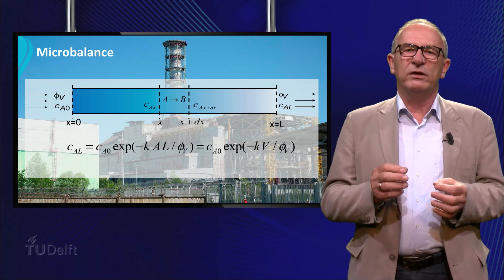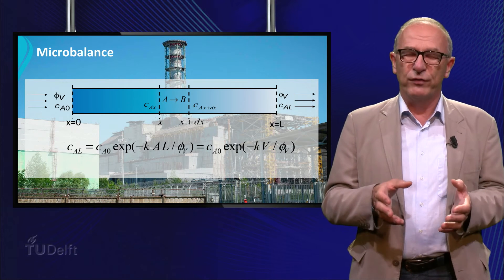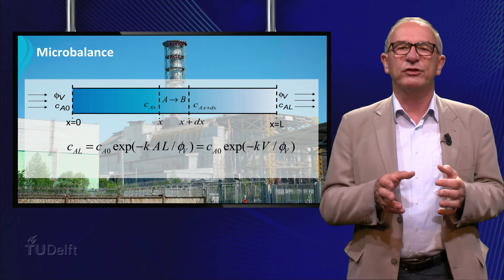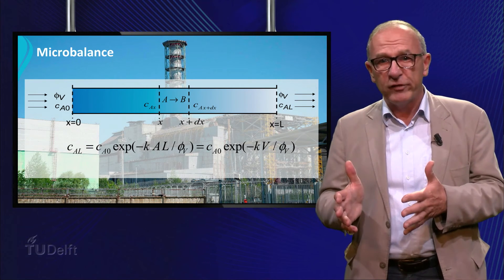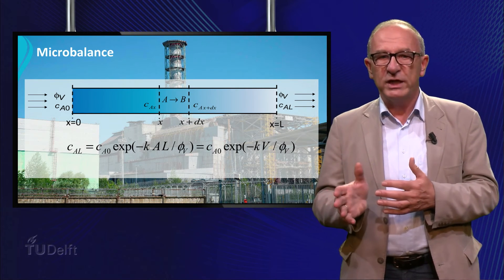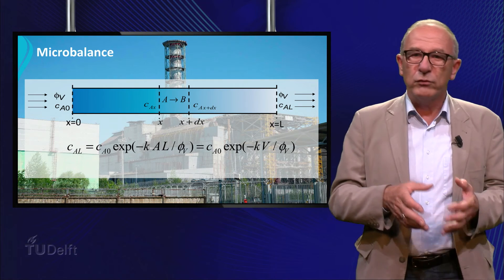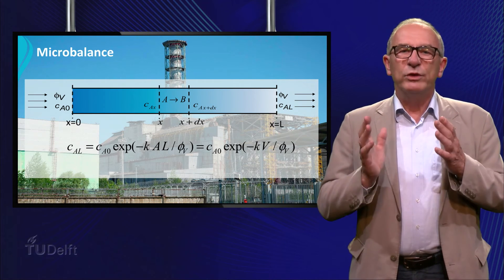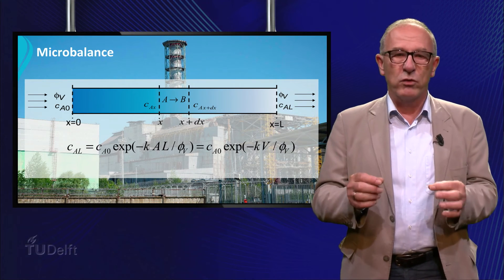The concept of the microbalance is often used in transport phenomena, in particular if concentration or temperature changes as a function of place and time. This can be in Cartesian coordinates like x and x plus dx, or in cylindrical or spherical coordinates between R and R plus dr. You will see many examples of microbalances in this course.